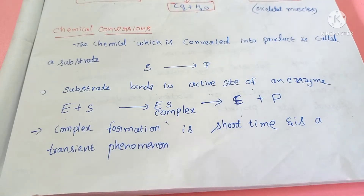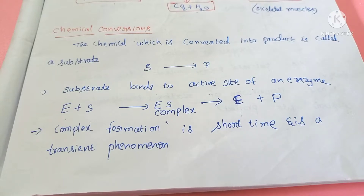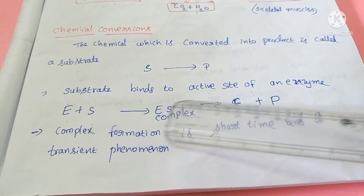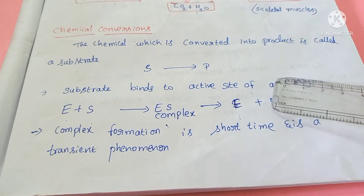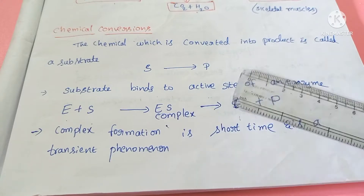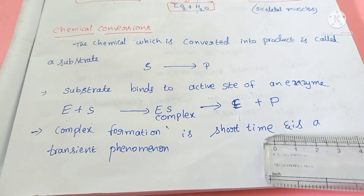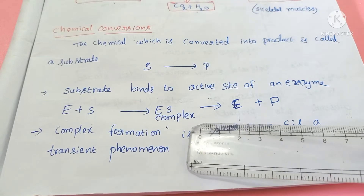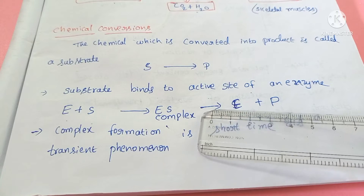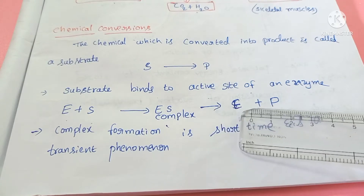Chemical conversions involve enzyme and substrate forming a product. The substrate is converted into a product by binding to the active site of an enzyme. In the enzyme, the active site forms an enzyme-substrate complex. This enzyme-substrate complex is formed in a very short time — it is a transient phenomenon. In the enzyme-substrate complex, the substrate is converted into a product by the enzyme.